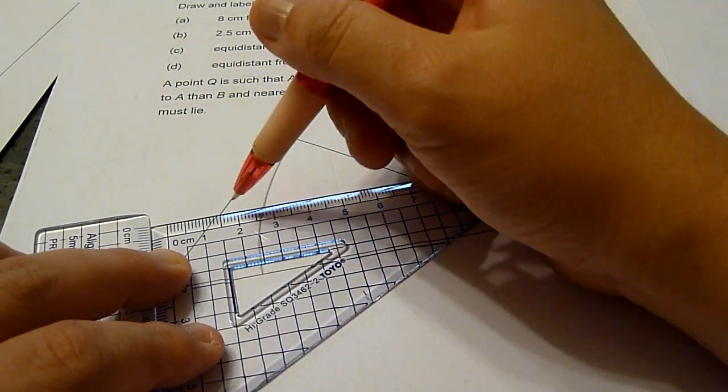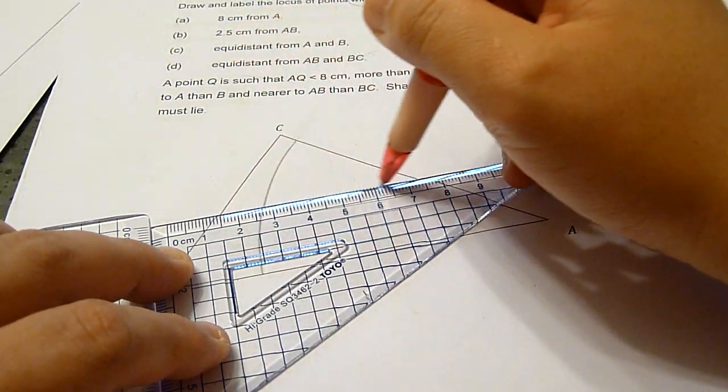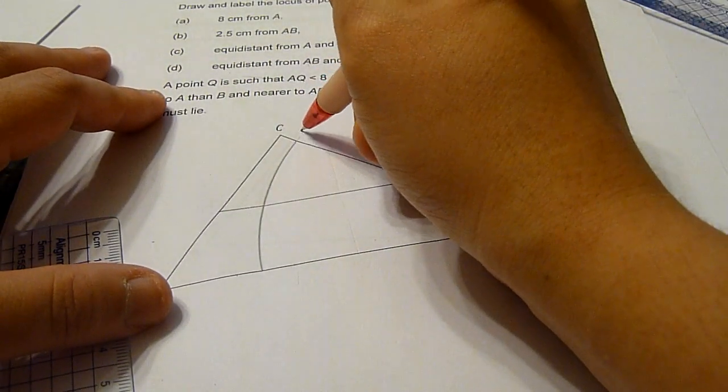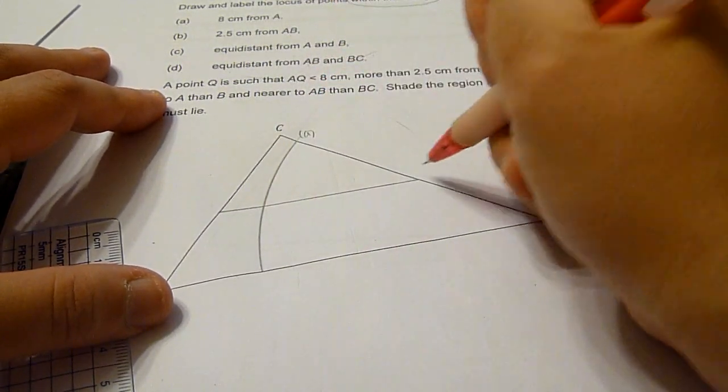And we draw the parallel line within the triangle. So, we got parts A and parts B ready.